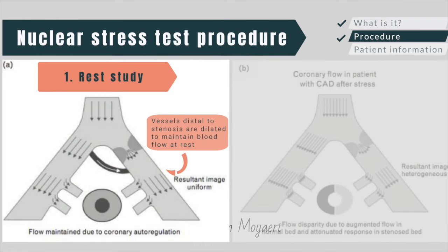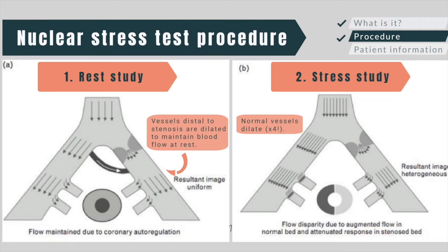The blood vessels distal to a significant stenosis are dilated by autoregulation to maintain blood flow at rest. Stress conditions cause normal vessels to dilate and increase blood flow up to four times the basal blood flow, but little additional dilation is seen in a stenotic vessel.